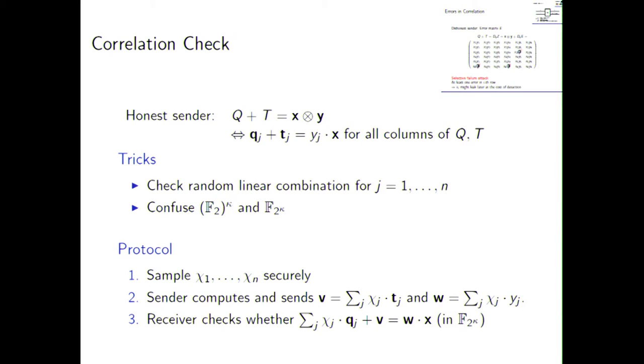On the other hand, if X6 is 1, then the receiver will notice that the sender cheated, and as a result, he will abort. So, there is essentially a chance, there is a 50-50, if X6 was generated randomly, which it usually is in our context, there is a 50-50 chance of learning that the bit is 0 or failing the protocol. And this is a selective failure attack. We can put this slightly differently. If there is at least one error in the ith row, Xi might leak later, but there is a cost of being detected for the sender.